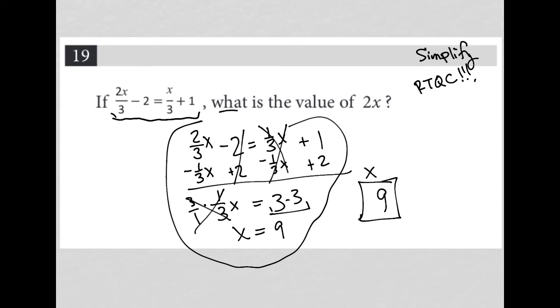The question says, what is the value of two x? So we know x is equal to nine, but two x therefore must be nine times two, which is 18. So our real answer here is 18.